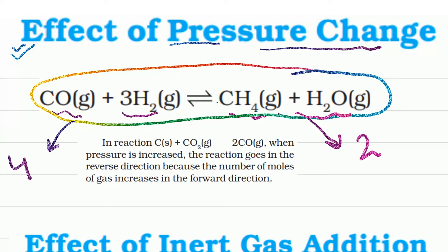The effect of pressure change: if pressure increases, the reaction proceeds in the forward direction — toward the side with fewer moles of gas, which is the product side (methane formation). If pressure decreases, the reaction proceeds in the backward direction, forming more CO and hydrogen, increasing the number of moles.